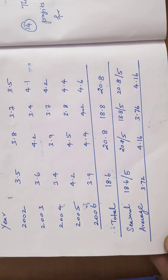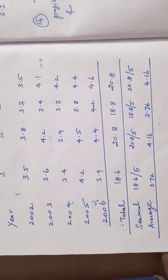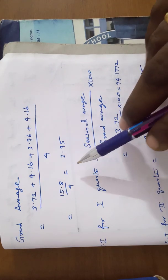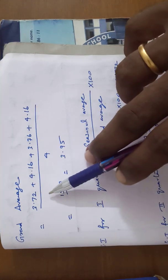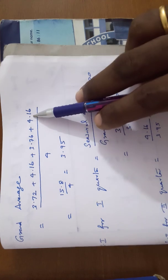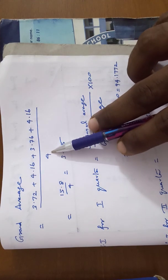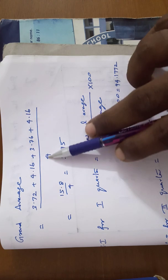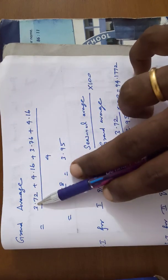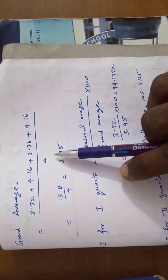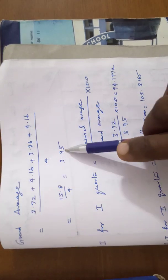Next, we have to compute the grand average for this expression. The grand average can be taken as each and every quarterly total by seasonal index value. Seasonal index values are 3.72 plus 4.16 plus 3.76 plus 4.16 by 4. 4 is the 4 quarterly value. We have to take 4 quarters. Seasonal index value, 3.72, 4.16, 3.76 and 4.16 by 4, so 15.8 by 4 equal to 3.95. This is the grand average.